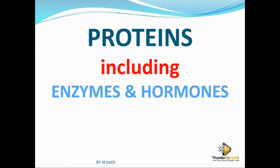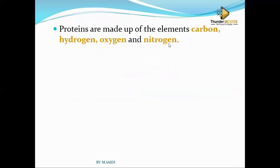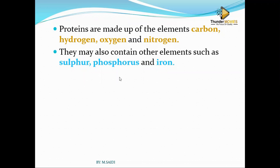We're going to look at the structure of proteins, then enzymes as a protein, and hormones as a protein. Proteins are made up of carbon, hydrogen, oxygen, and nitrogen. All organic molecules are made up of carbon and hydrogen, plus oxygen and nitrogen depending on which organic molecule it is. Proteins also contain elements of sulfur, phosphorus, and iron.